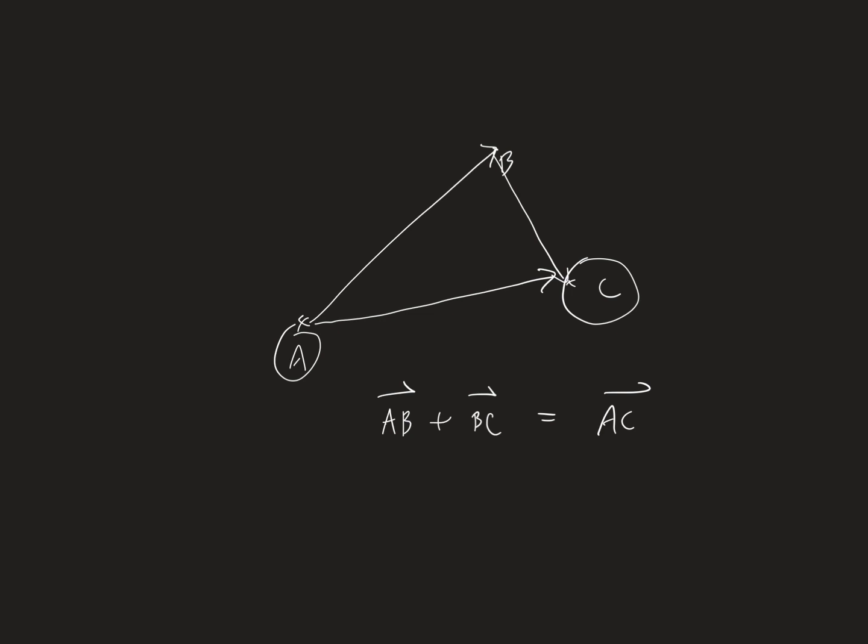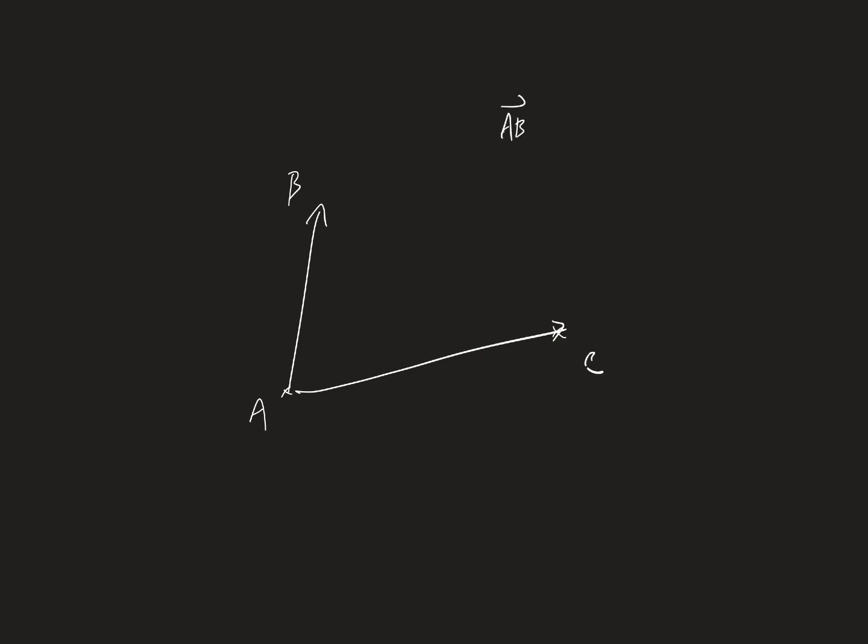Sometimes you'll use what we call the parallelogram law. For example, if we have two directions, one is AB and the other is AC, and the question asks for AB plus AC, it seems we cannot do any addition, but actually we can.